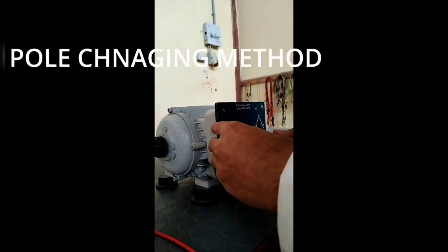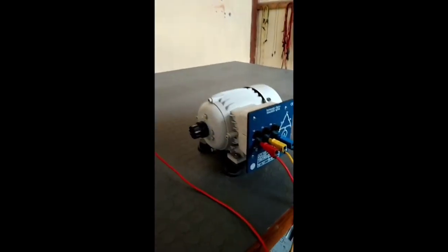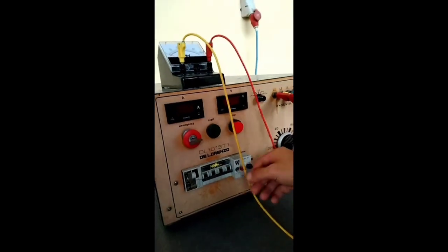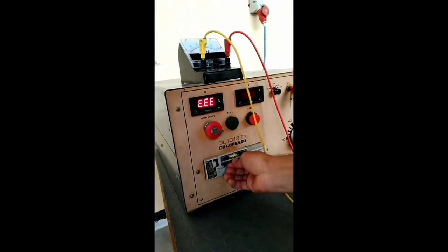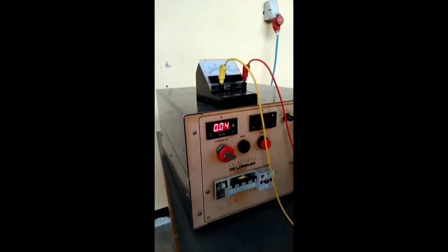Pole changing method. In this method, we have used induction motor having two rated RPM. We have used voltmeter of range 0 to 500 volts and ammeter of range 0 to 5 amperes. We have also used tachometer to measure RPM. In this experiment, there are two poles: high pole and low pole.